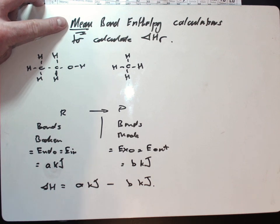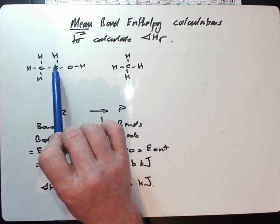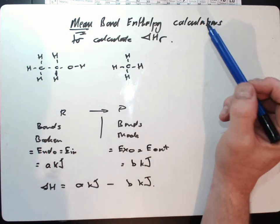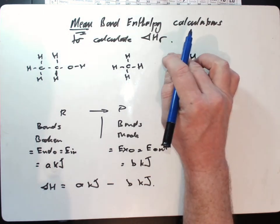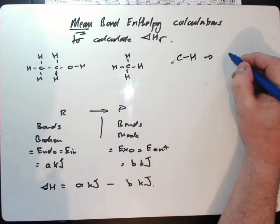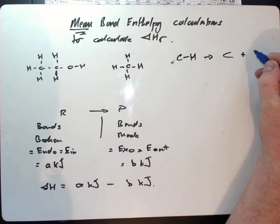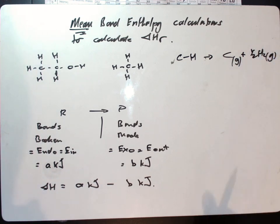A bond enthalpy is the amount of energy needed to break one mole of those bonds. So if I'm talking about the mean bond enthalpy of a carbon to hydrogen bond, I'm talking about the energy needed to break that bond to give me carbon and hydrogen.